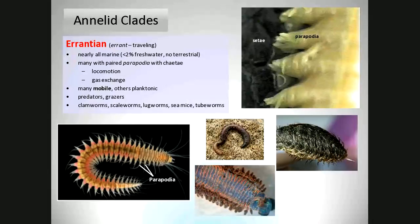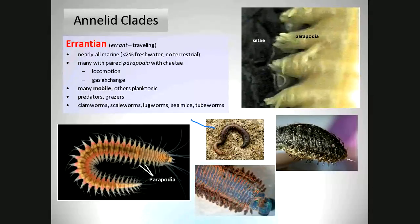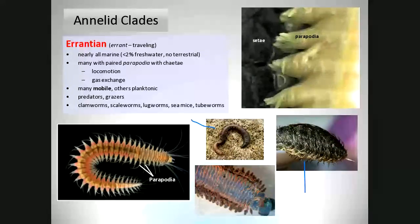Sea mice — another example of these bizarre organisms. When you look at them, they appear hairy, but it's not hair — those are modified parapodia. That's actually a worm. That's probably the 'mouse' part of the name sea mouse.